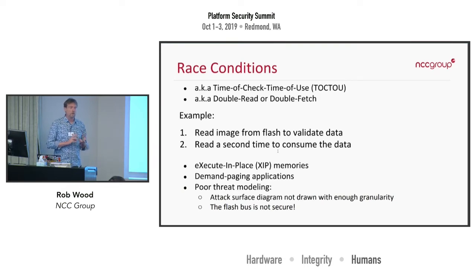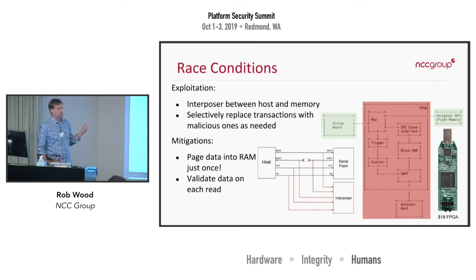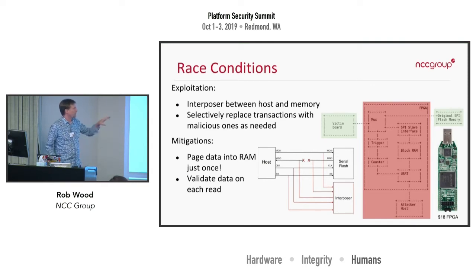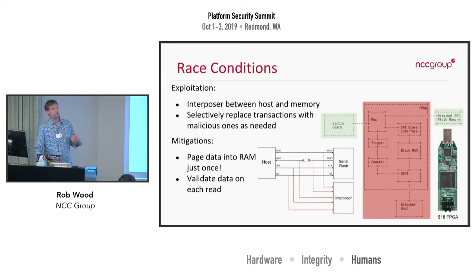Anything with execute-in-place memory or demand paging is almost always vulnerable to this scenario. To exploit something like this, I built a device: it's basically a cheap $20 FPGA that sits on the SPI bus between the victim board and its original flash memory. I wait for whatever the trigger condition happens to be, and then a multiplexer swaps it over to a payload block RAM. The idea is that I wait until after all the validation has been done, and then I swap in my payload so the victim board will happily run it. Mitigating this is just a matter of either reading it just once or validating it every time.